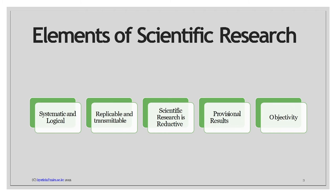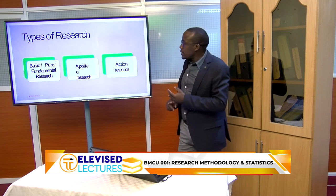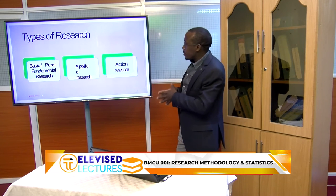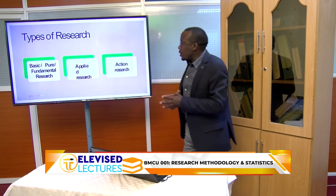Next, we are going to look at the types of research. Research is normally distinguished into three different thematic areas: qualitative approach, quantitative approach, or a mixed approach. We also look at research types in terms of three distinct categories: basic or pure or fundamental research, applied research, and action research.